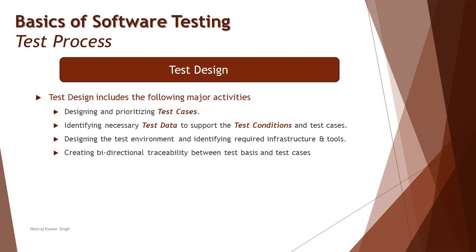You also start creating a relationship between the requirements or parent documents and the test cases you are creating. This relationship is called traceability, and it should be bidirectional — meaning it can be measured from requirement to test cases or from test cases back to requirements. We'll be looking at some example traceability matrices when we discuss test cases in more detail, and we'll take a deeper dive into test conditions, how they're written, and the artifacts involved.